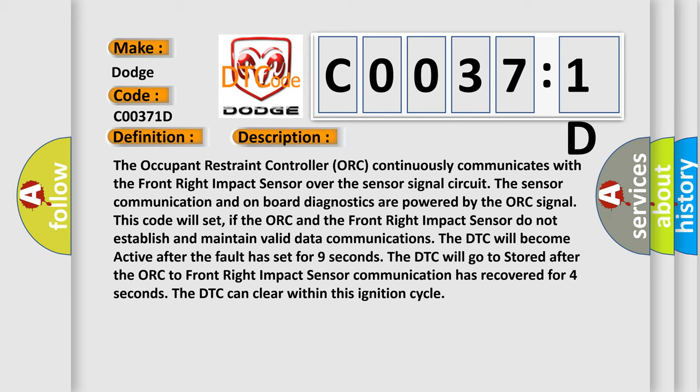The DTC will become active after the fault has set for nine seconds. The DTC will go to stored after the ORC to front right impact sensor communication has recovered for four seconds. The DTC can clear within this ignition cycle.